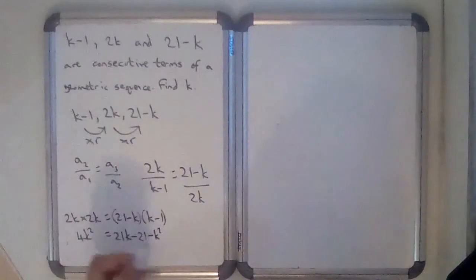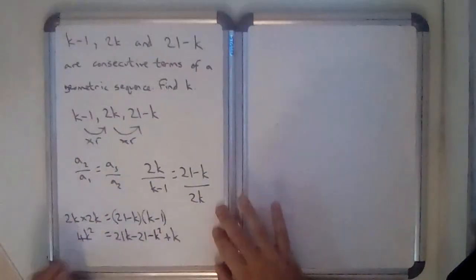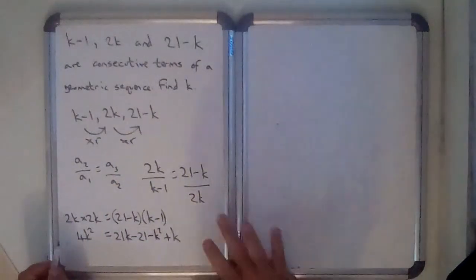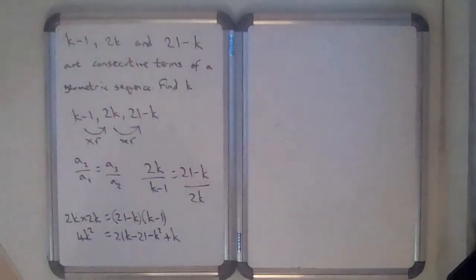And then you've got minus k times minus 1 is plus k. So that means if we put everything on the side, so it makes it equal 0...